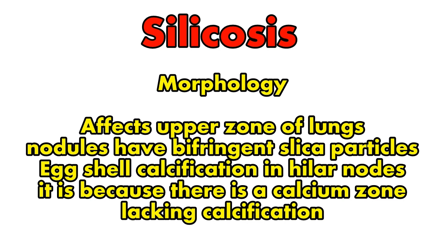Talking about the histopathology of silicosis: it affects the upper zone of the lungs, and there will be nodular opacities seen in concentric layers of collagen with or without central cavitation. When the nodules are examined, they show birefringent silica particles. You will also see eggshell calcification in hilar nodes.